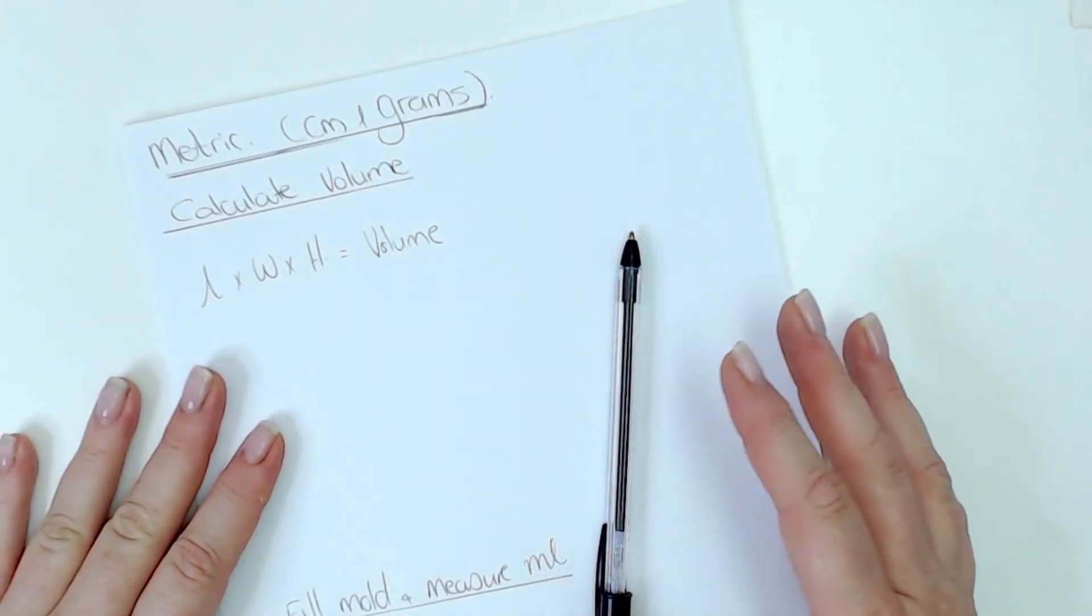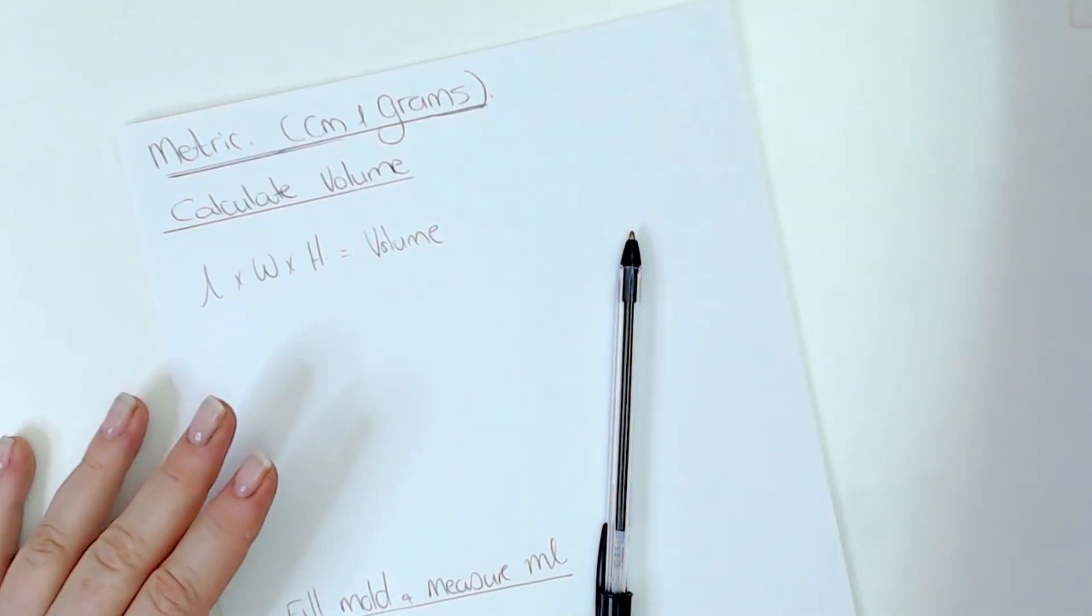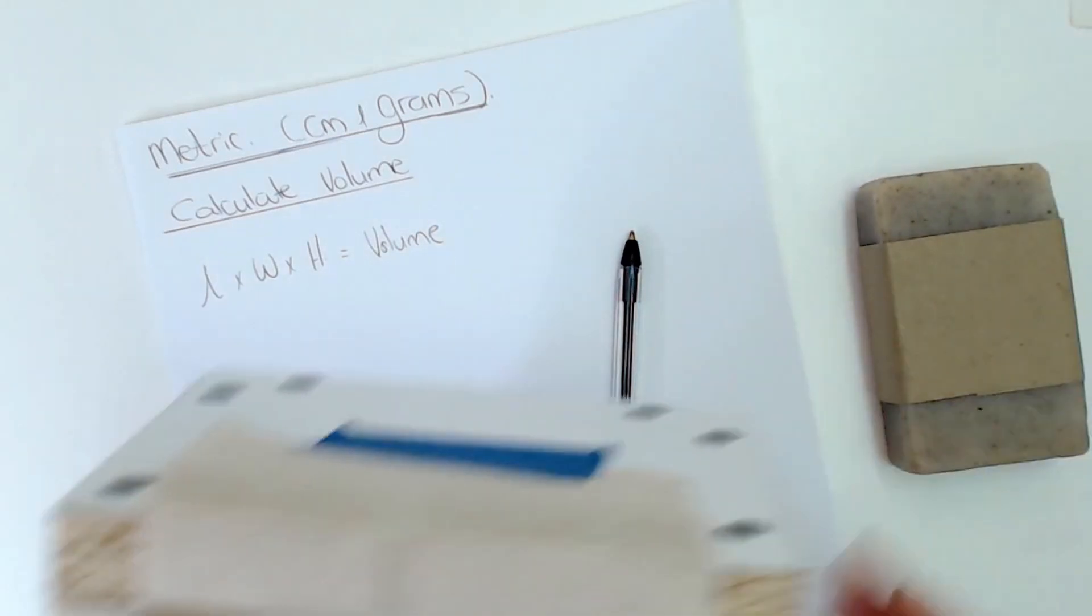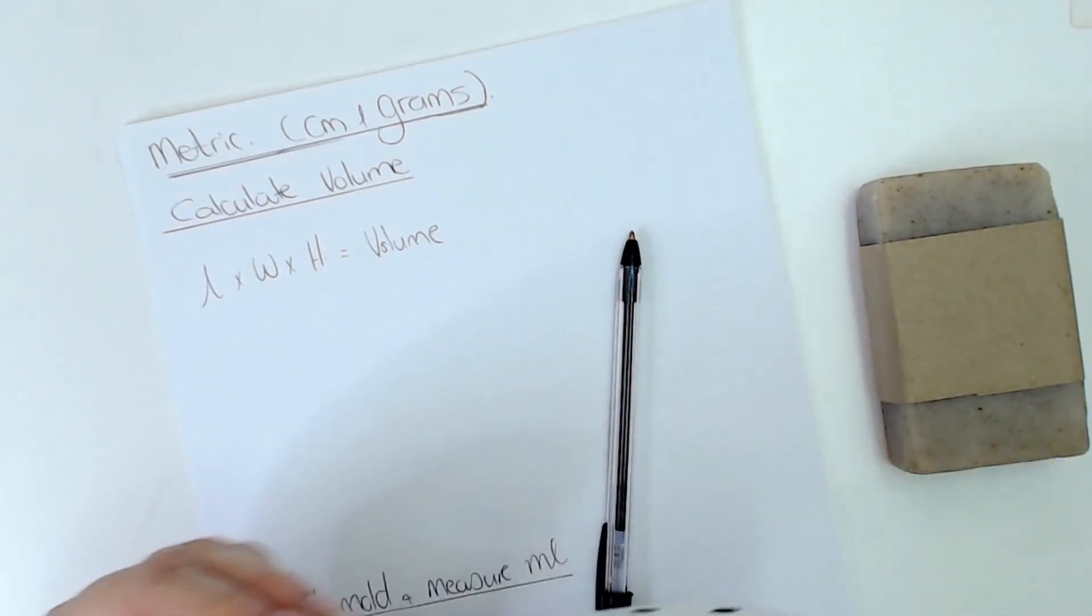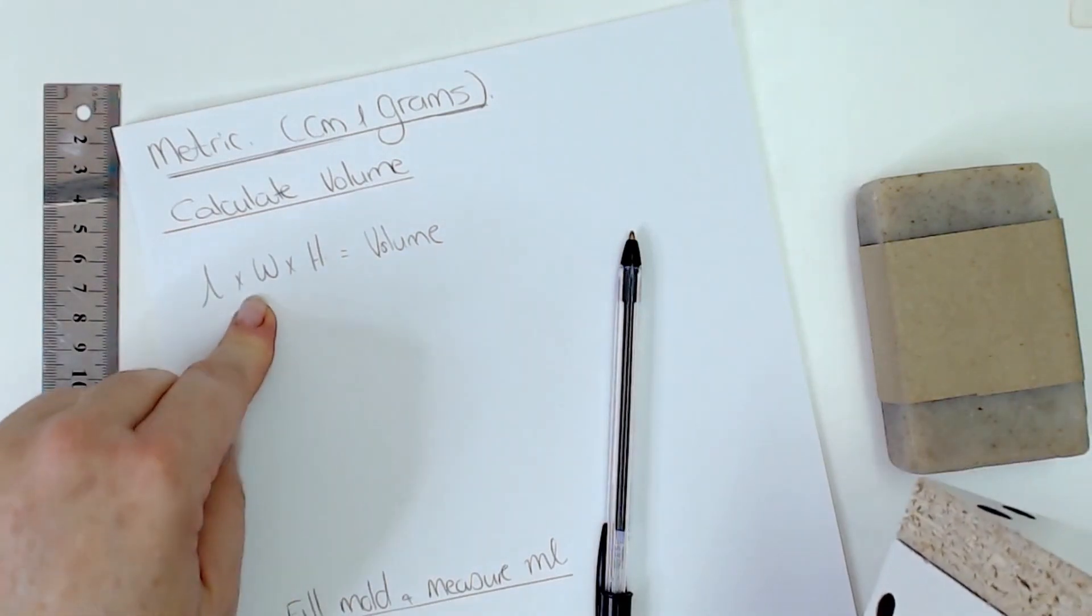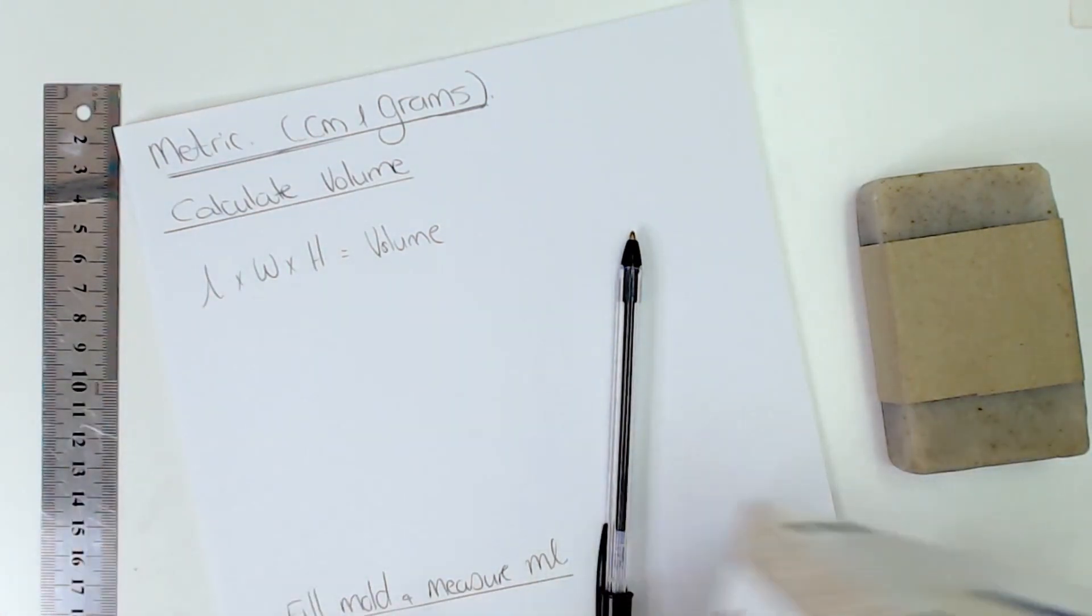Okay, the reason why we calculate the volume of our mold is so that we know how much soap batter we need to mix up for a specific mold. So I'm going to show you two different ways. The first one is going to be to use a ruler and to measure your mold and work it out with a formula, and the next one is to fill your mold with rice or something and then we're going to use a measuring cup to measure it with.